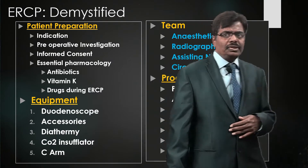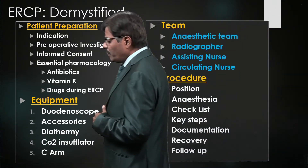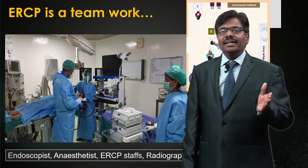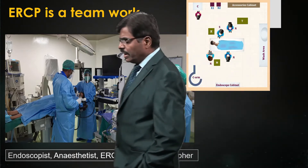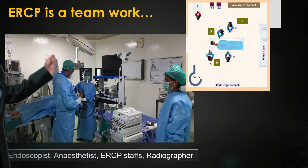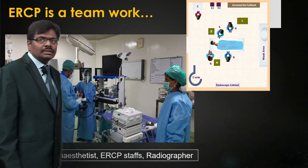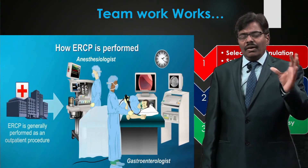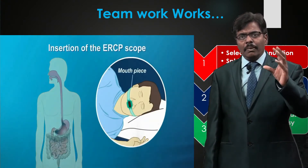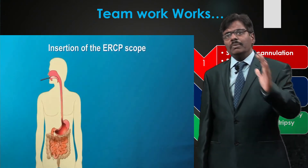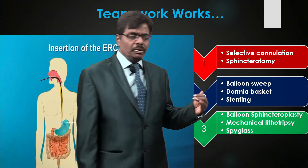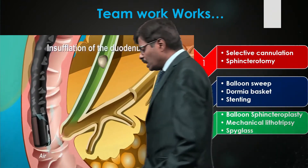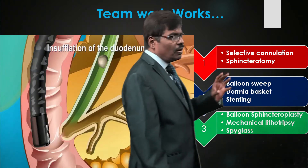ERCP is a four-letter word with four key persons: the endoscopist, the anesthetist, one or two ERCP-trained staff nurses, and a radiographer. The layout of my OT shows how I stand, the anesthetist position, and my staff nurse with all accessories ready, knowing exactly what is expected. ERCP is a labor-intensive, highly demanding procedure with a steep learning curve — you need to observe at least 25 procedures before starting, and persevere through 150 to 200 cases to achieve a cannulation rate of around 90%.